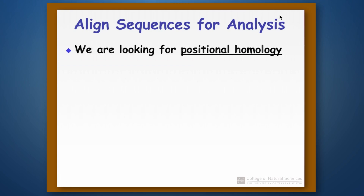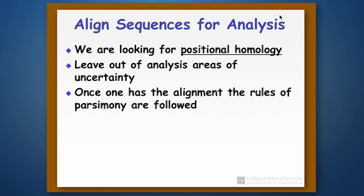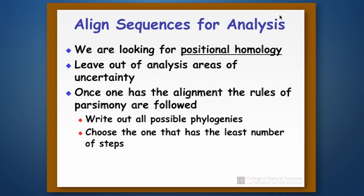What we are looking for is something we call positional homology. The idea is that each column in our alignment represents the true evolutionary history of a position in that DNA or protein sequence. Sometimes sequences can be very complicated and we may not be certain that we have gotten the positional homology correct — in those cases we leave those areas out of analysis. We don't want to create artificial evolutionary histories. Once we have the alignment, we follow the rules of parsimony: we write out all possible phylogenies and choose the one with the least number of evolutionary changes.